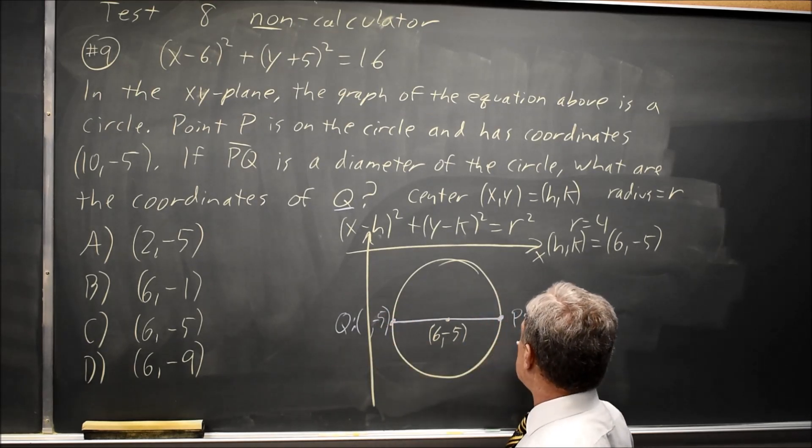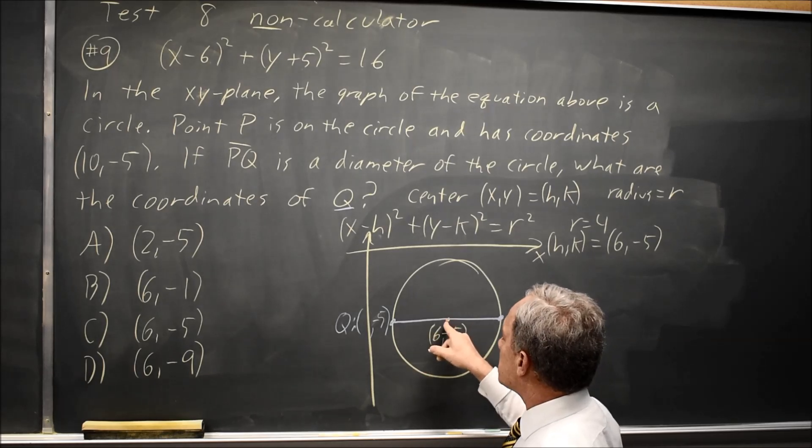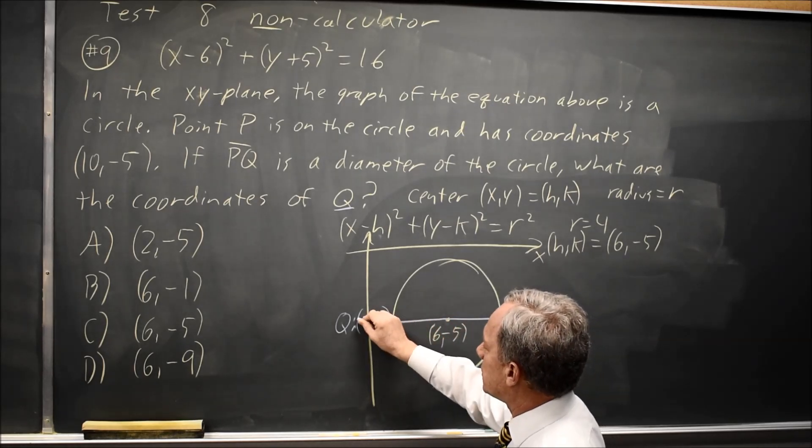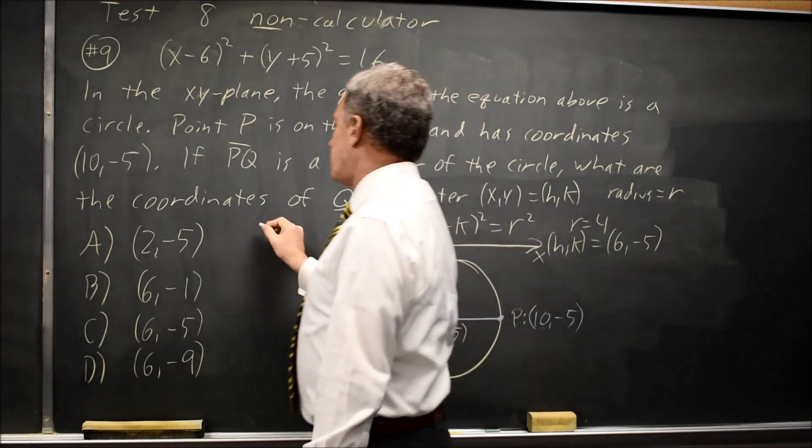And the X coordinate: X goes down 4 from 10 to 6, that's one radius. It goes down another radius from 6 to positive 2. So Q is at (2, -5).